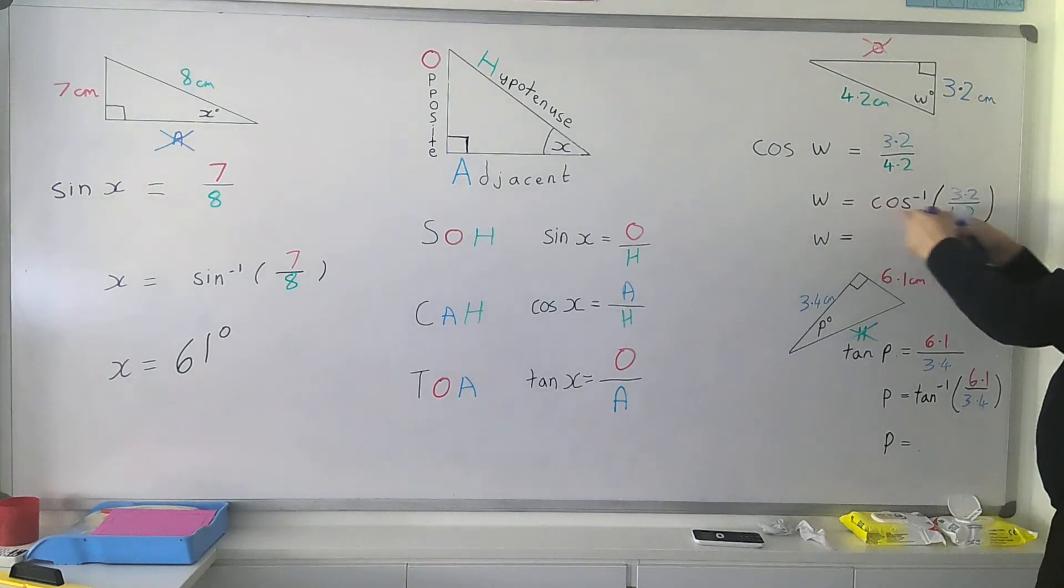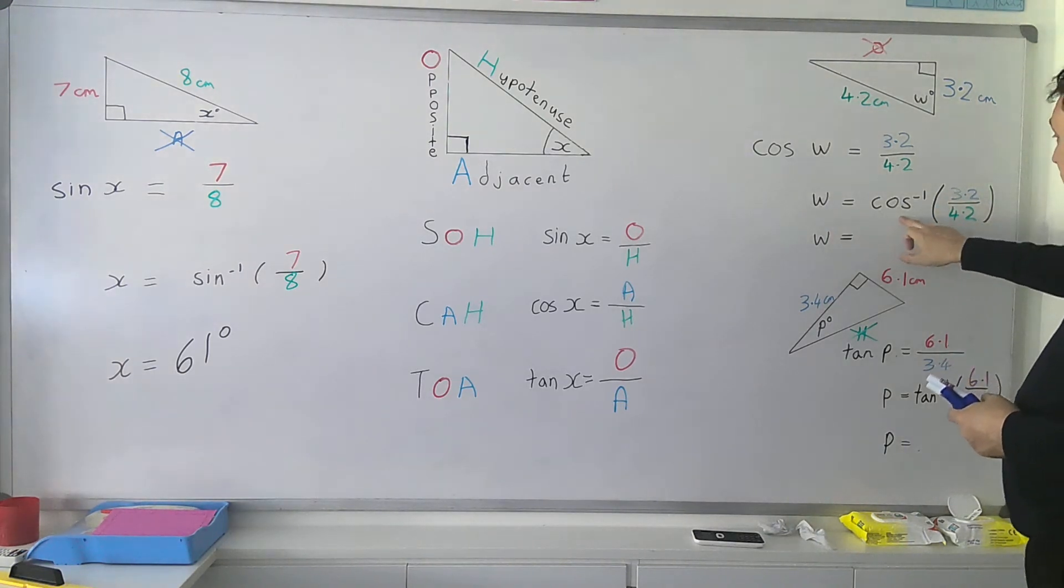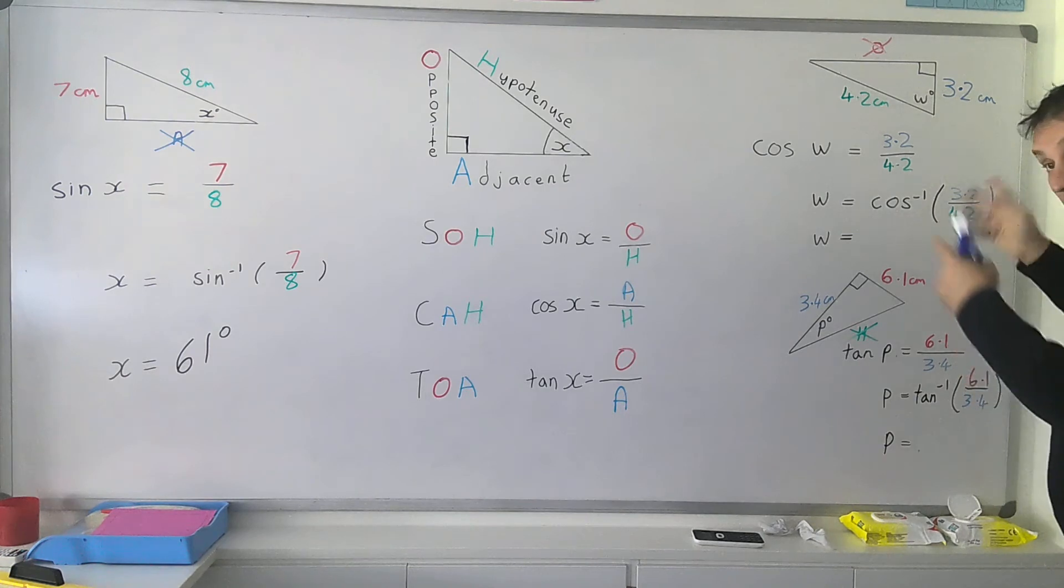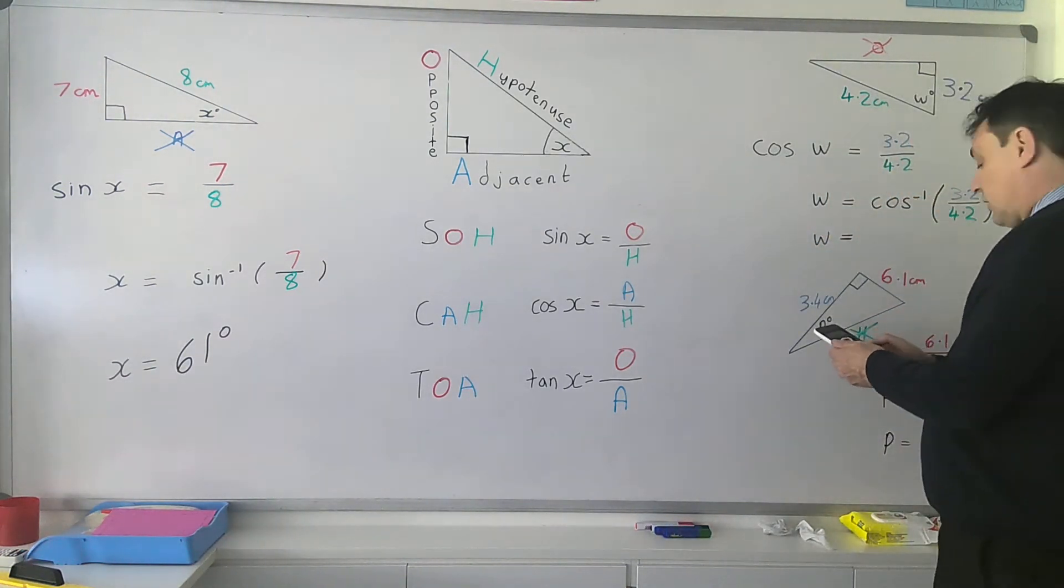Again, we do this changing step now to do the inverse cos, the cos to the minus 1. So w is inverse cos of 3.2 divided by 4.2.